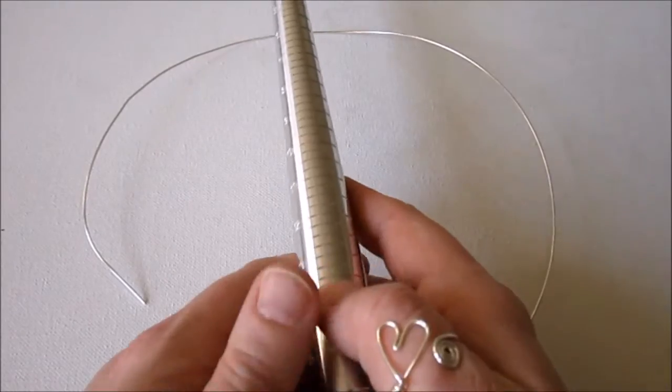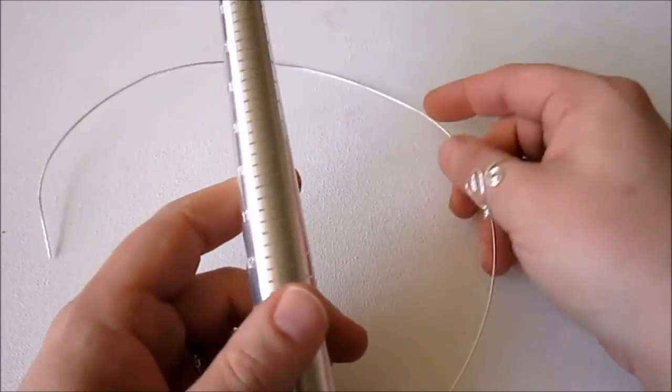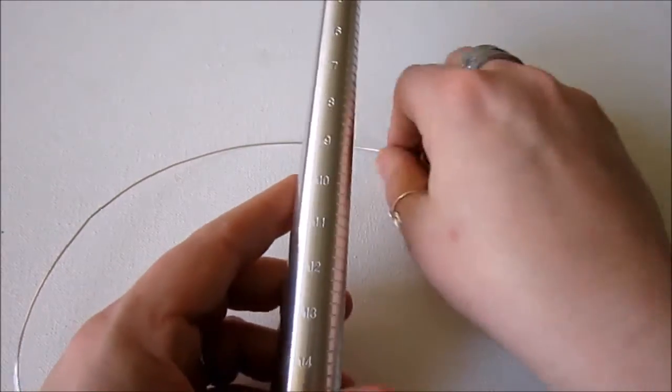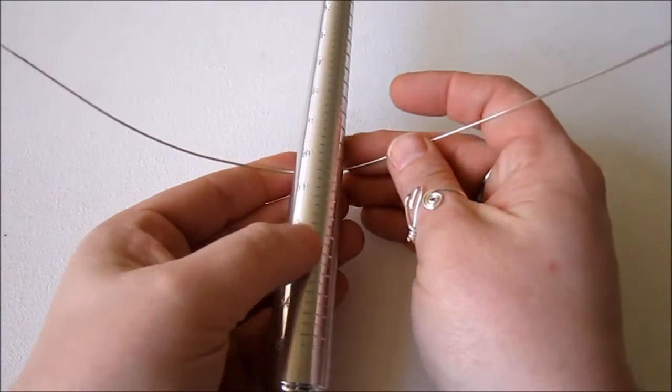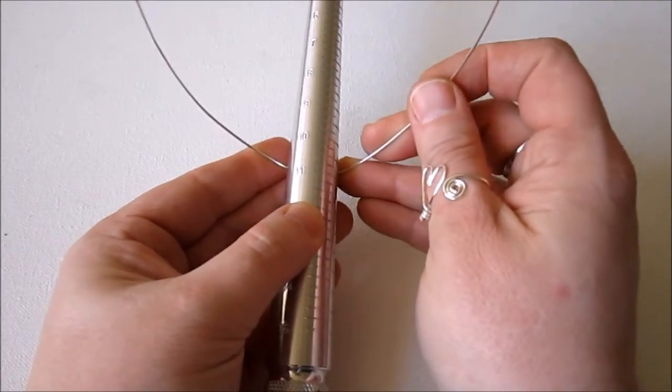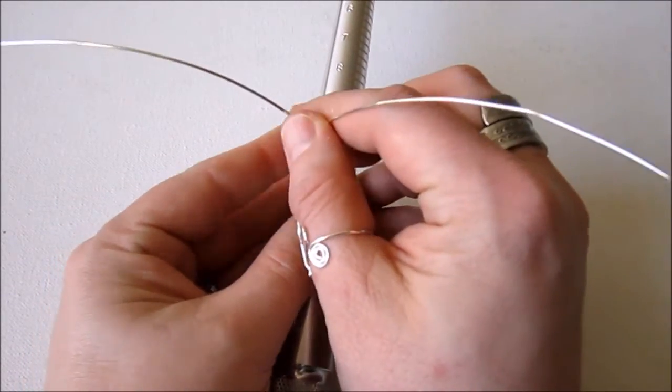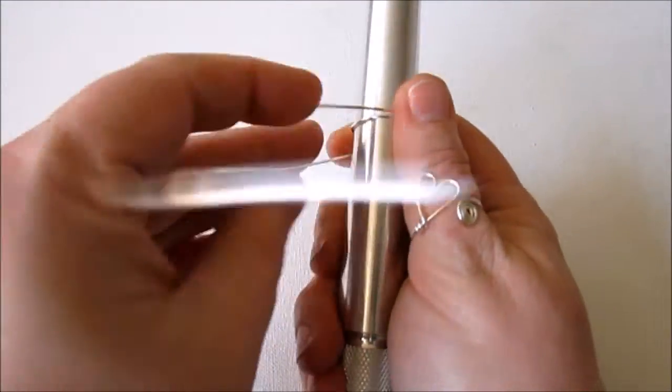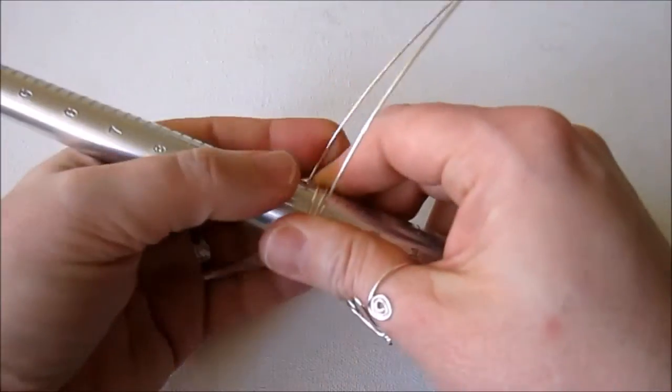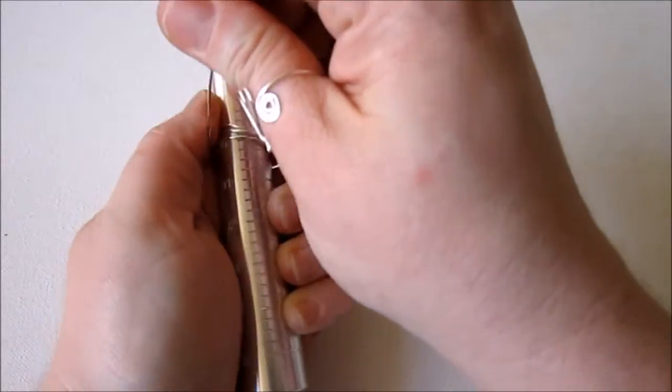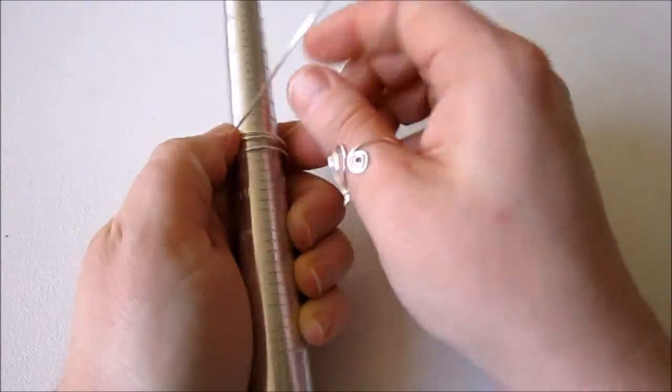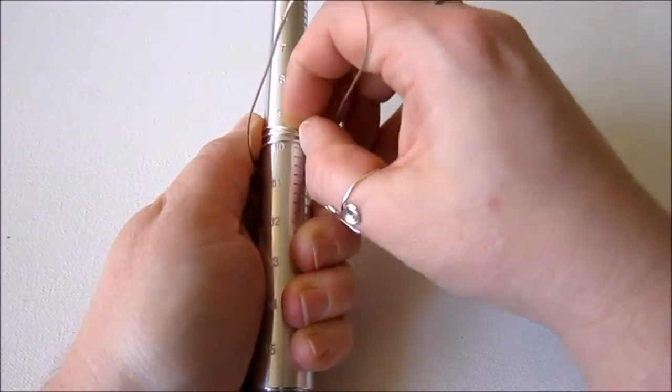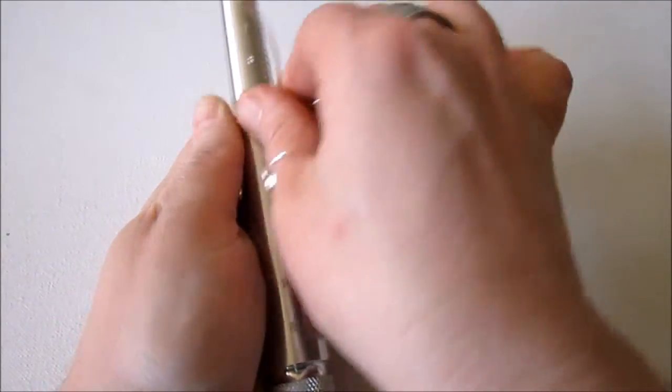Now you're going to get your ring mandrel and you're going to find the size you want to make of your ring on this ring mandrel. And then you're going to wrap around a size larger than that. And then we're going to wrap around a few times. And now we're going to pull this all tightly and go up to the half size larger.